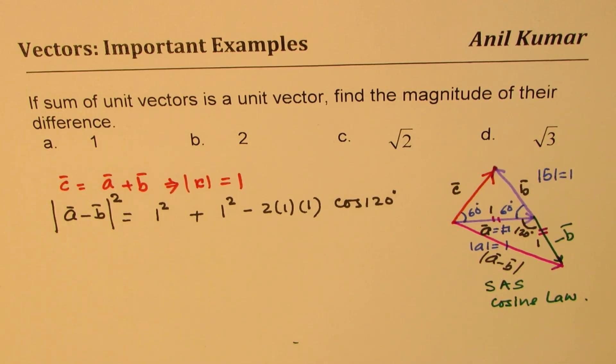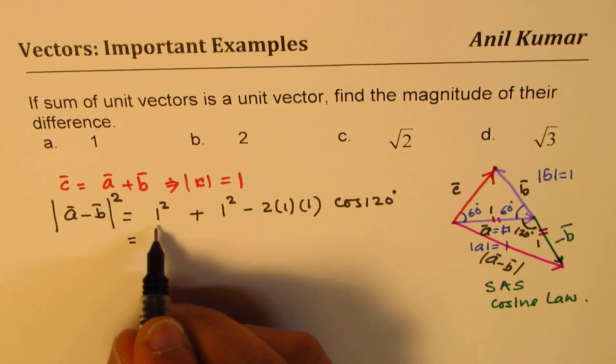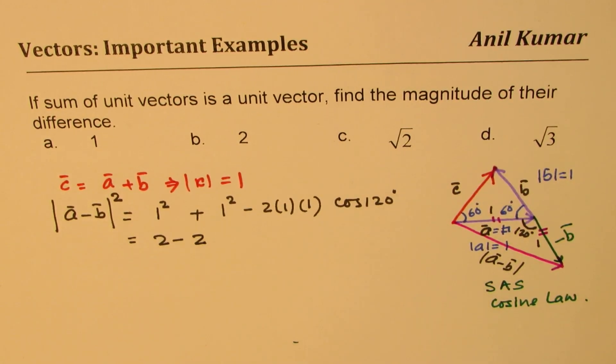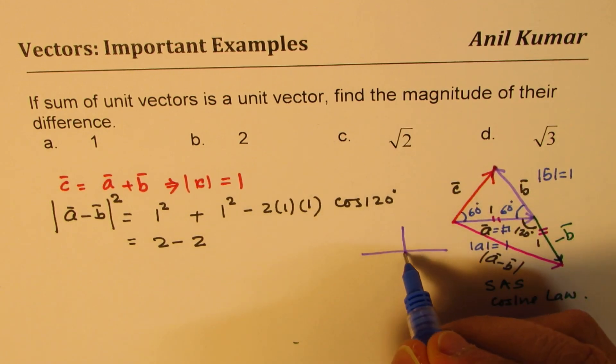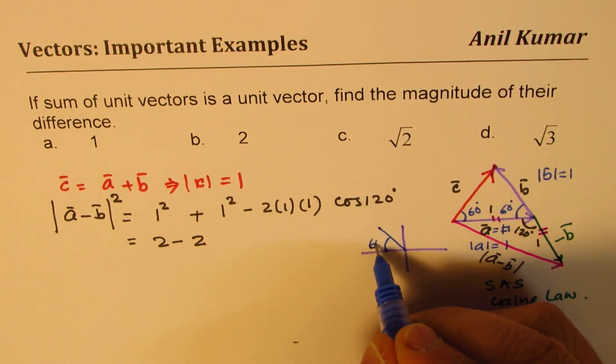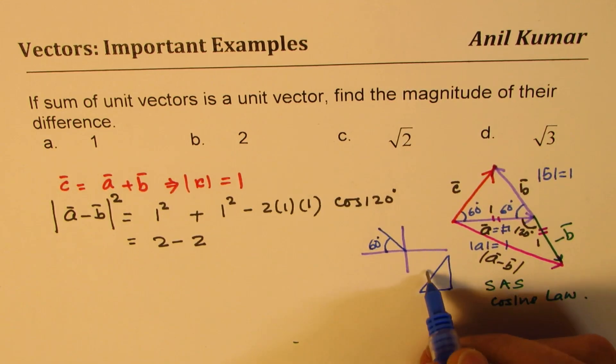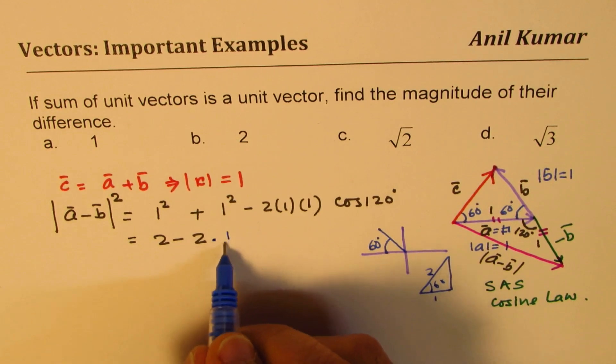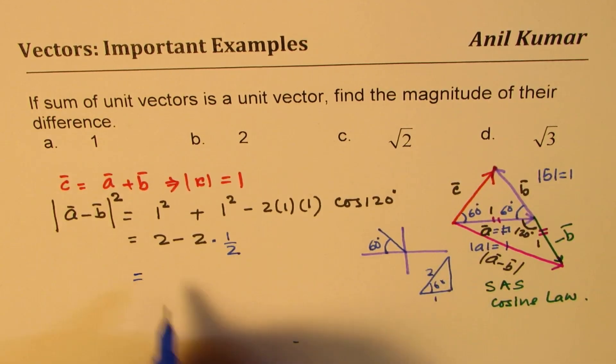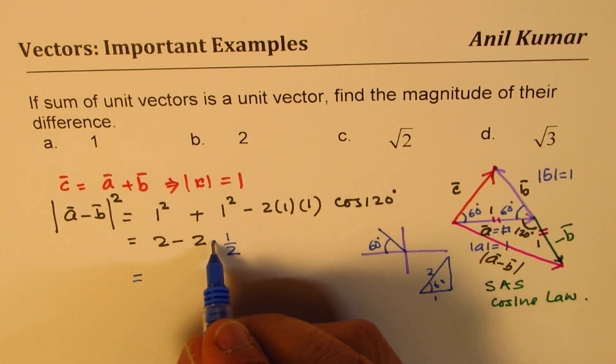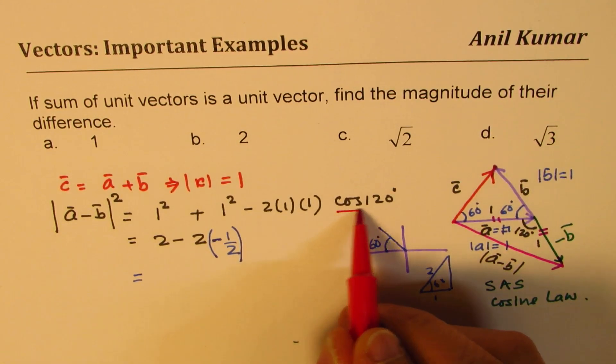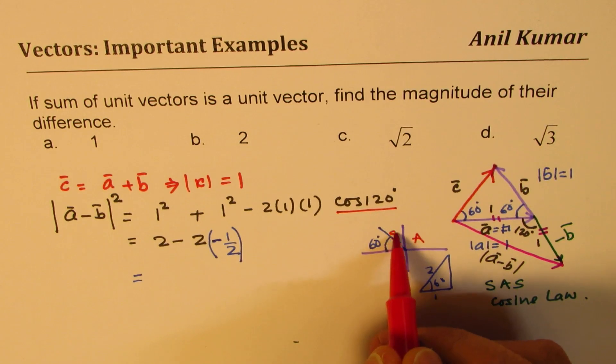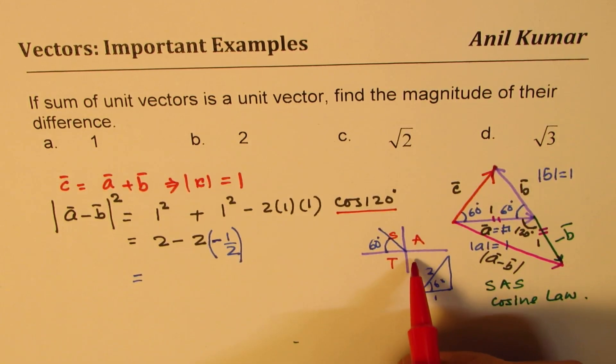So that gives you answer as 1 plus 1 is 2 minus 2 times. What is cos of 120? So if you look into the cosine angle in quadrant 2, it is going to be negative, acute angle being 60 degrees. So if you look into the triangle, it is half for 60 degrees. So it is 2 times half. And that too, because it is on this side, it will be negative. It will be negative half. So that is going to be your value of cos of 120.